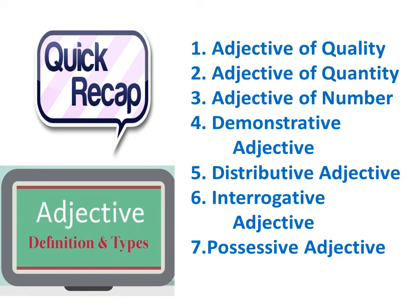An adjective is a describing word which describes the noun or which modifies the noun in a sentence. We also learnt the seven types of adjectives: adjective of quality, adjective of quantity, adjective of number, demonstrative adjective, distributive adjective, interrogative adjective, and possessive adjective. We learnt three of these types with definitions — adjective of quality, adjective of quantity, and adjective of number.